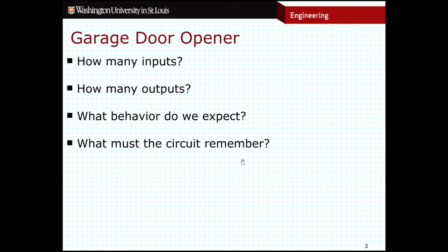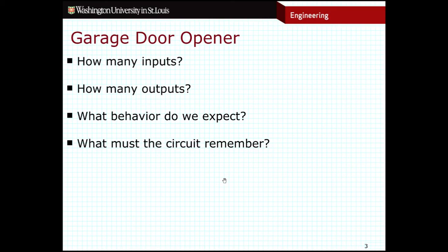So what does this circuit need to remember? We need to remember if we are currently opening or currently closing because that dictates what the button does and whether or not we're looking for obstructions. We also need to remember whether we are currently open or currently closed. And if we pause the door — if we tell it to start closing and then hit the button again to pause it — we need to remember that we were closing so that the next time we hit the button, we go in the opposite direction.